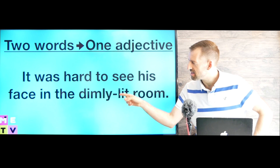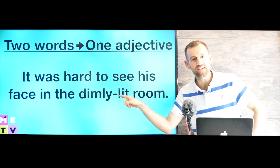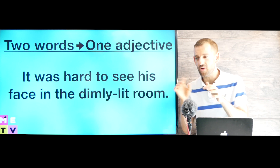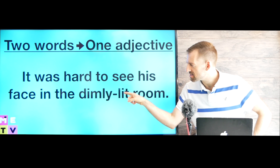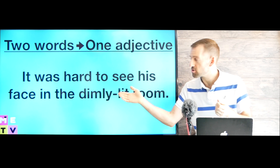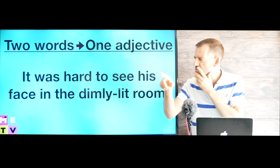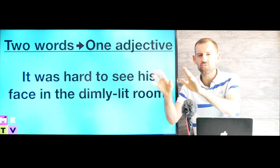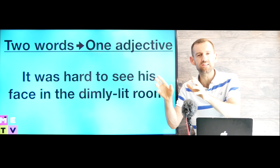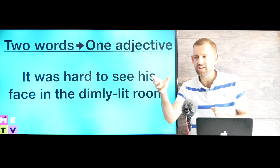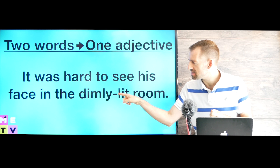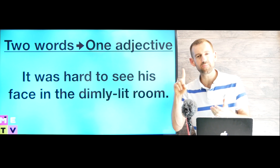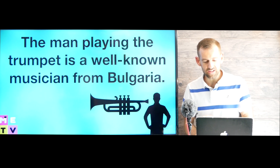It was hard to see his face in the dimly-lit room. Dimly-lit — it's very good, descriptive writing. Dim means very low light, and lit means the amount of light. So there are almost no lights in the room; maybe one small light or a candle. These two words are becoming one adjective, and you'll see this a lot in English.